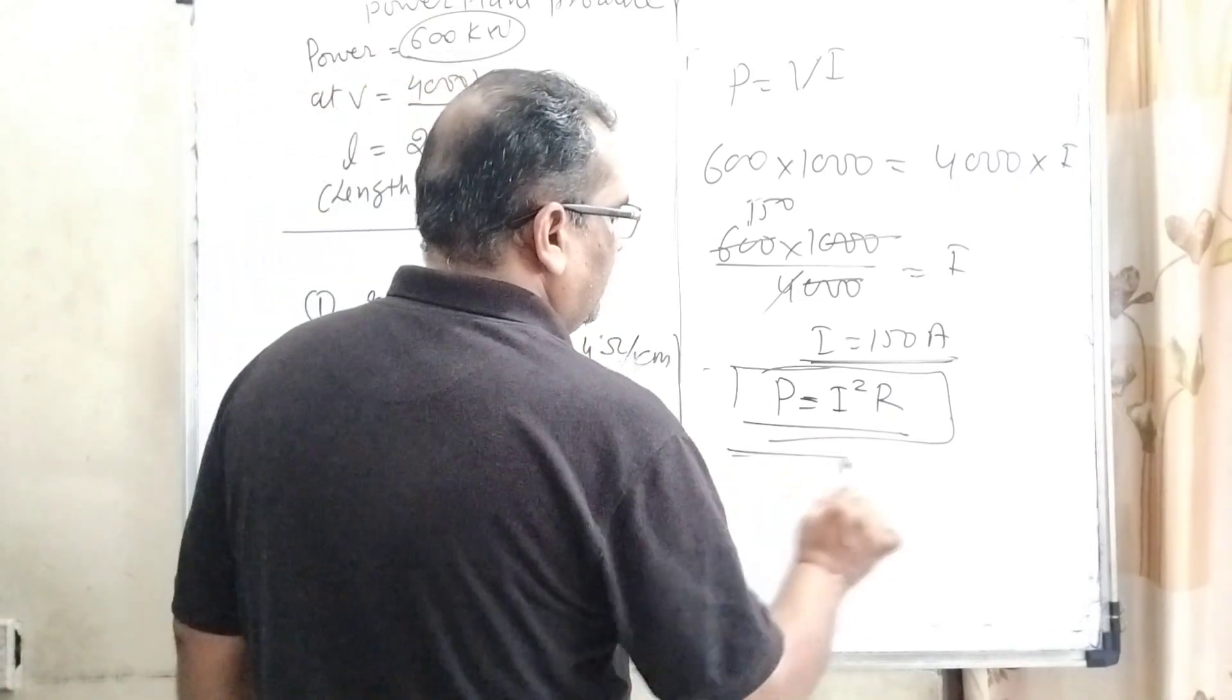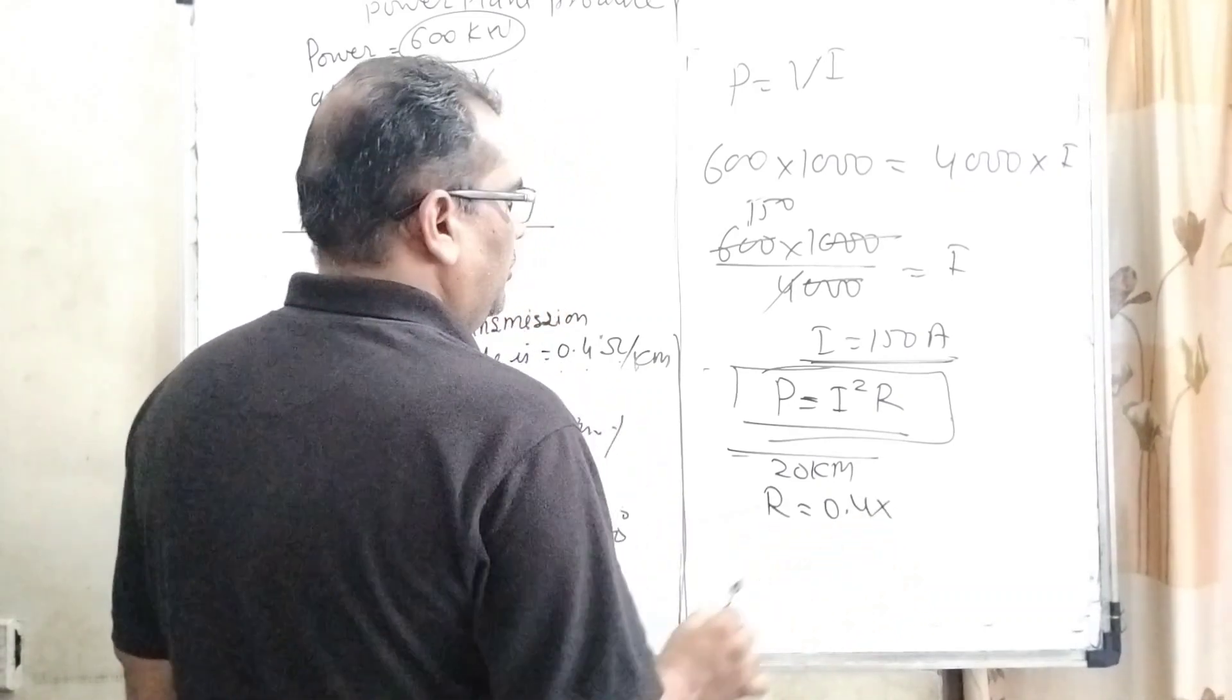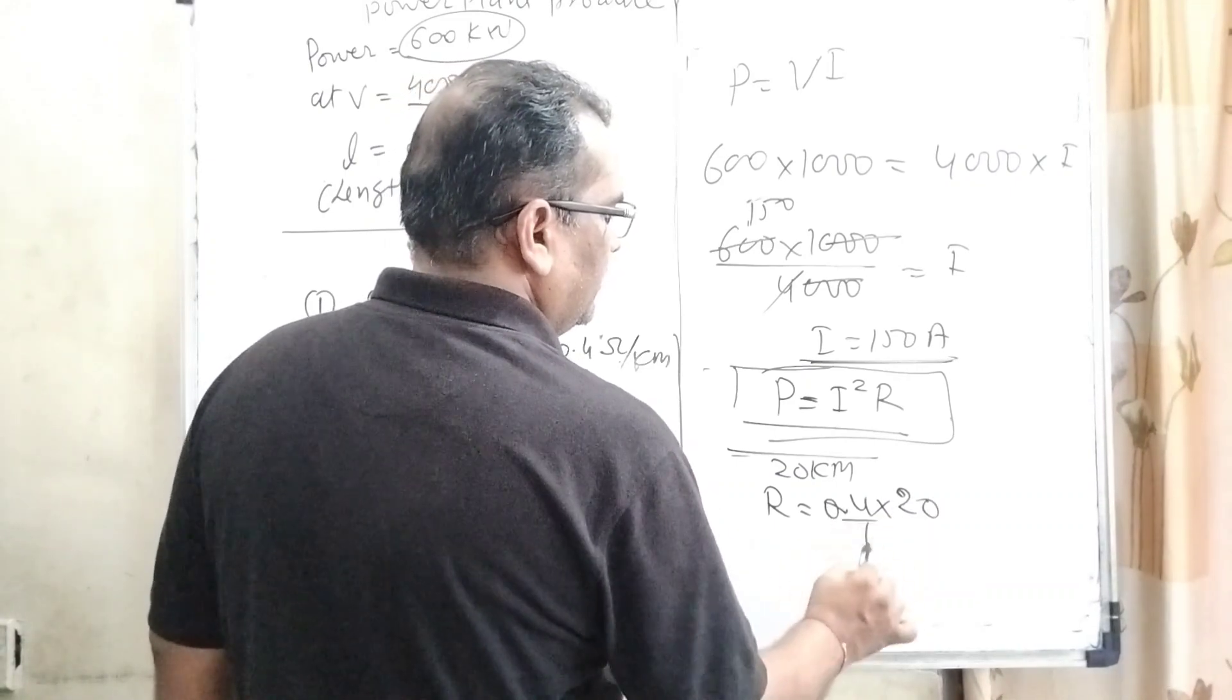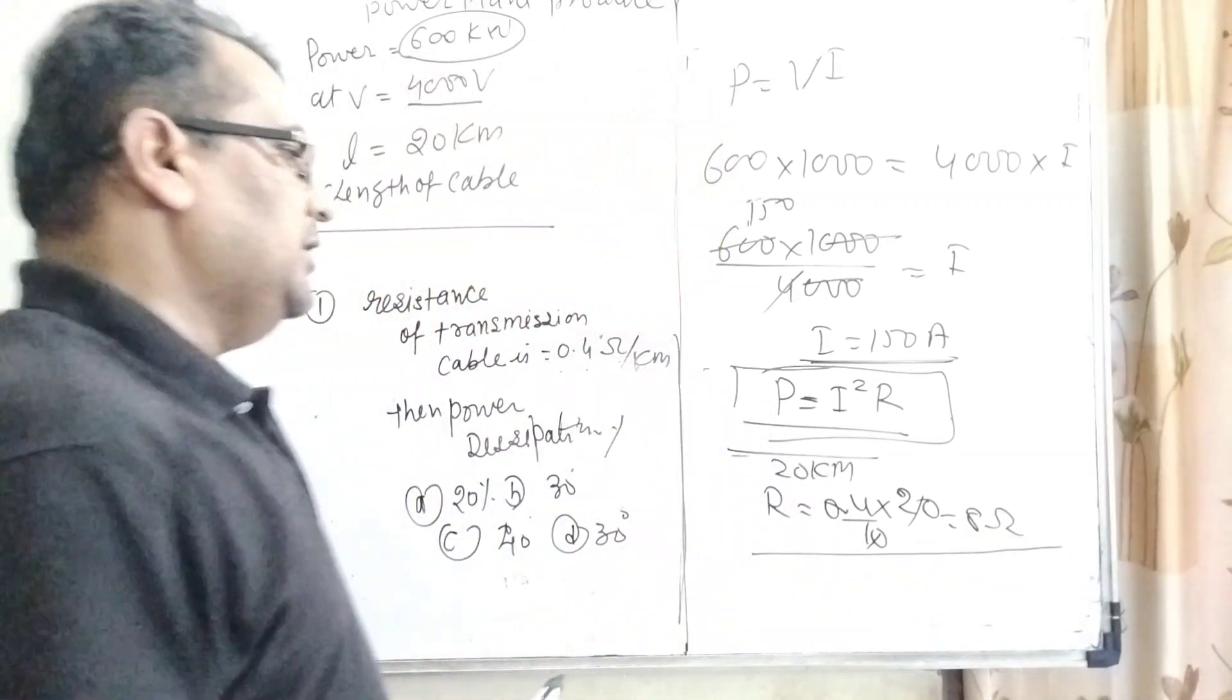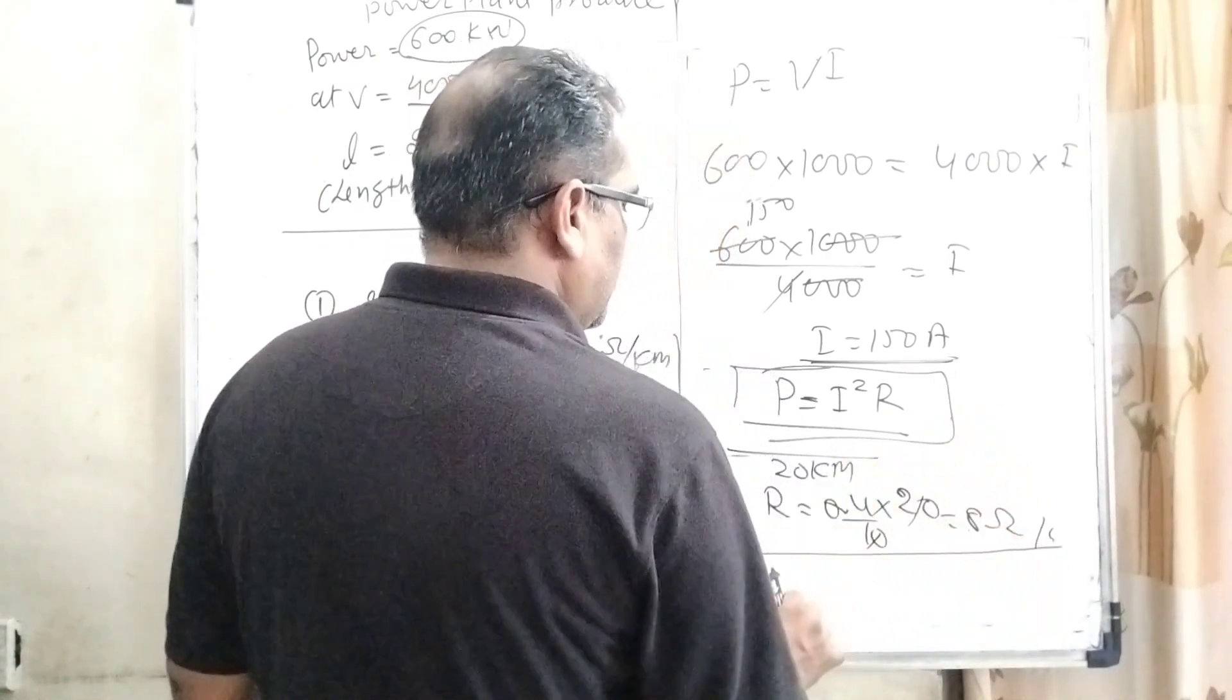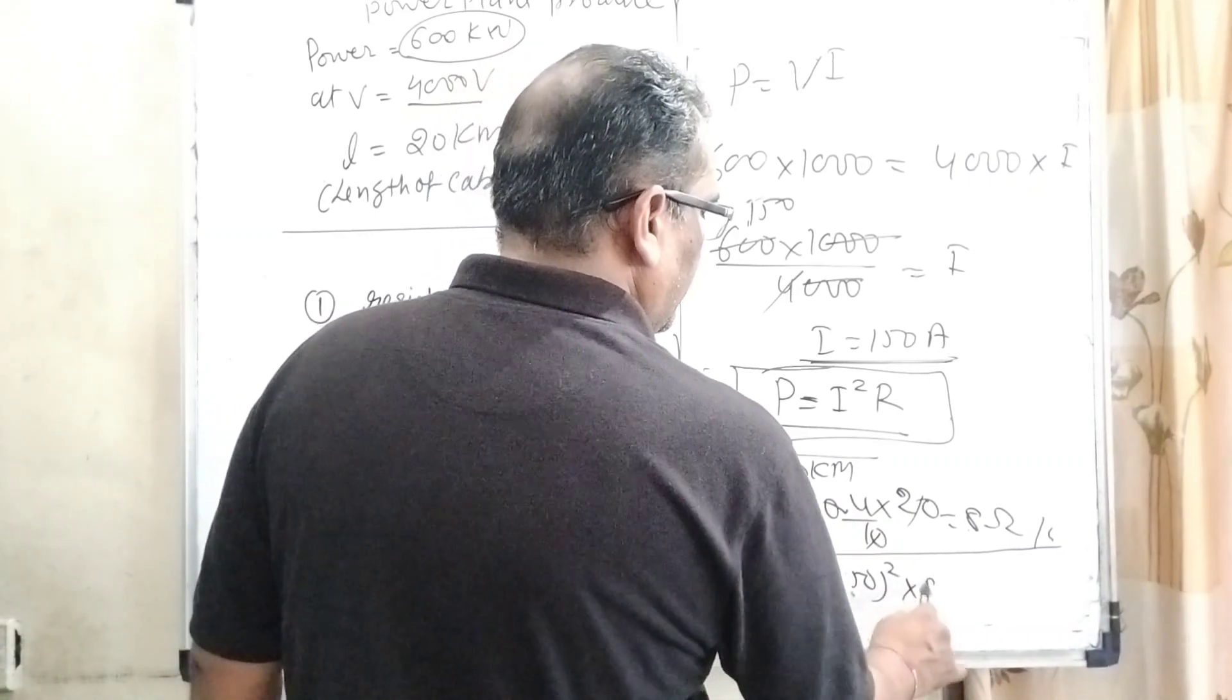Then total length of the cable is given 20 kilometer. So here net resistance 0.4 into 20 kilometer that is 8 ohm. So here we get total resistance R equal to 8 ohm. So now substitute this value here 150 square into 8.